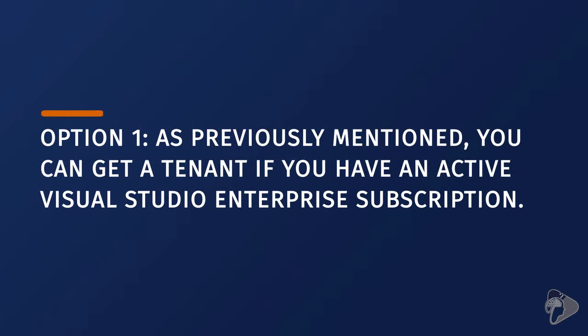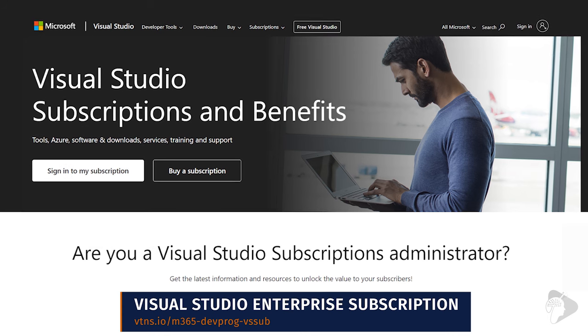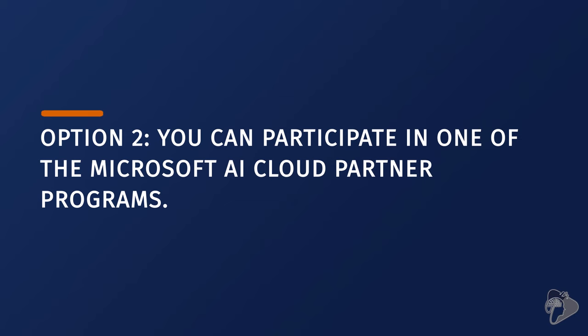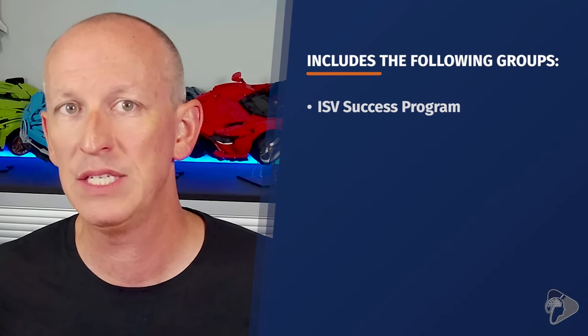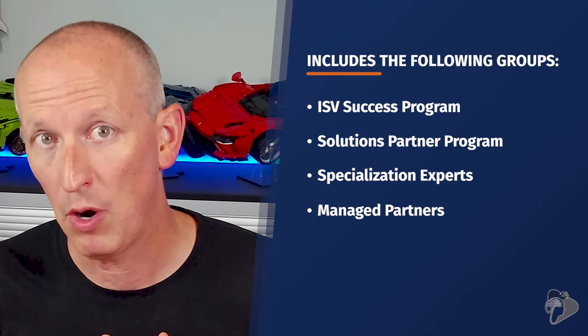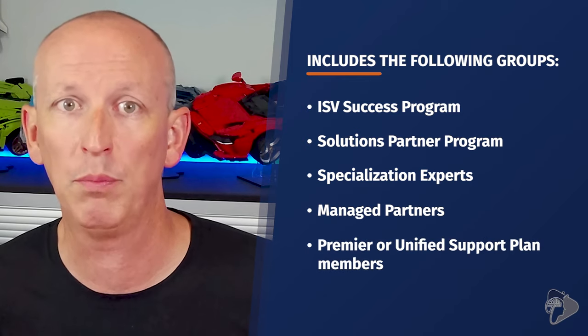Currently, the short-term solution provides several ways to obtain a Microsoft 365 developer sandbox tenant. Option one: you can get a tenant if you have an active Visual Studio Enterprise subscription, available from visualstudio.microsoft.com/subscriptions. Option two: you can participate in one of the Microsoft AI Cloud Partner Programs, available from partner.microsoft.com partner center. You can contact your Microsoft partner to be added to an allow list — this includes the ISV Success Program, the Solutions Partner Program, specialization experts, managing partners, managed partners, and premier or unified support plan members.